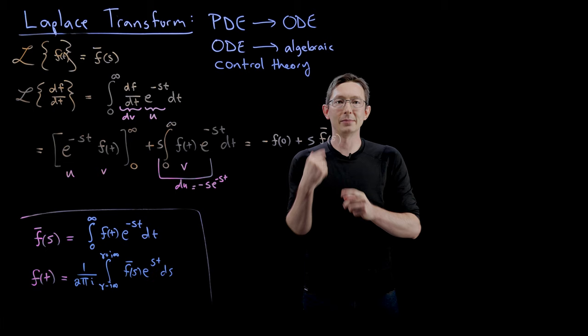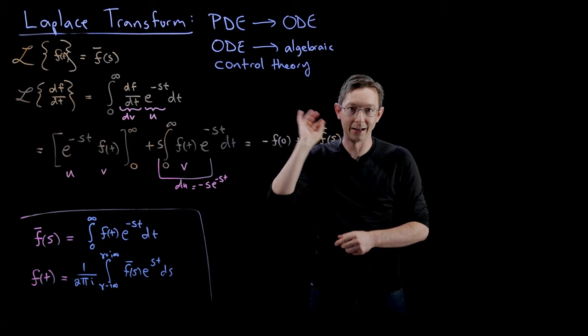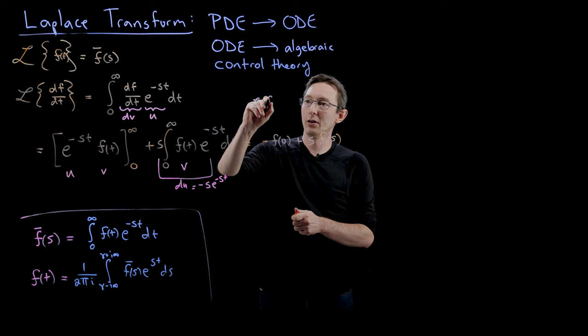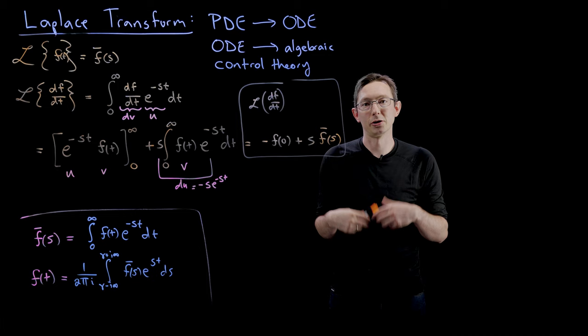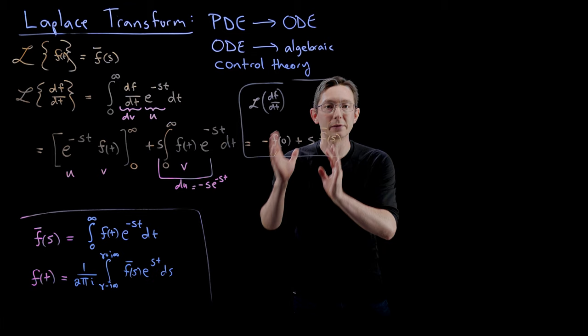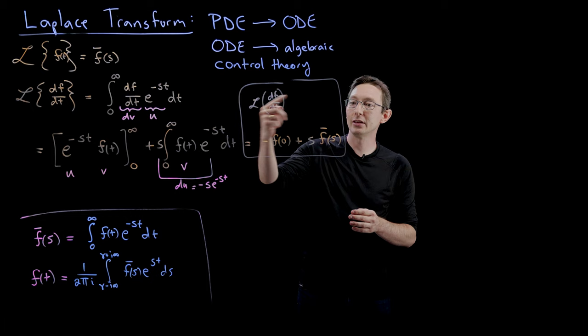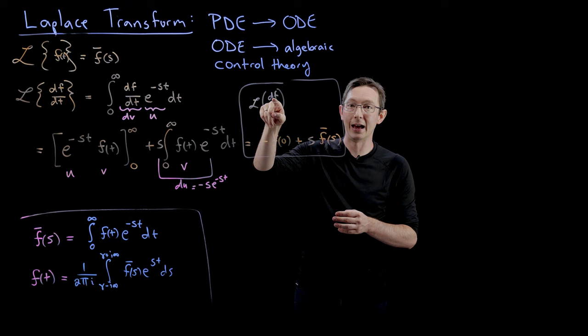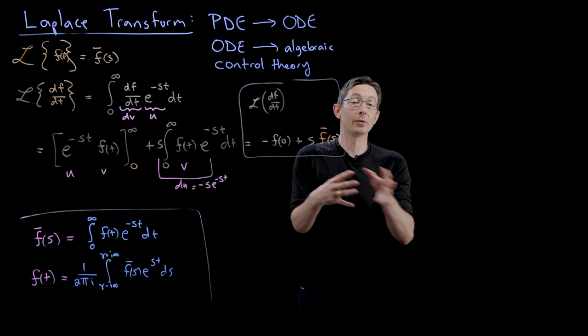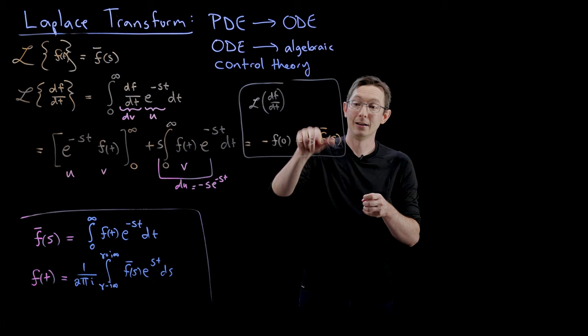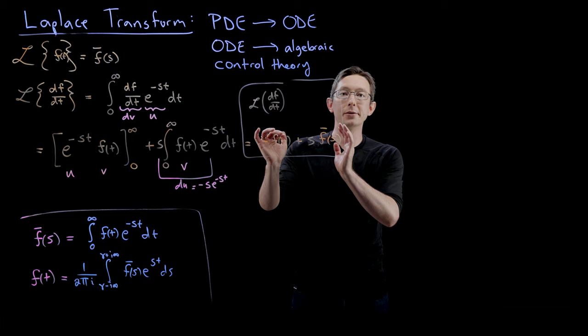So the Laplace transform of the derivative of a function is S times the Laplace transform of the function, minus the initial condition — minus that function evaluated at time zero. The Laplace transform of dF/dT equals S times F-bar of S minus F(0). This is an absolutely incredibly useful formula because it allows me to take differential equations and turn them into polynomials in S. A second derivative becomes S squared, a third derivative becomes S cubed, so higher derivatives just turn into polynomials in S times F-bar.